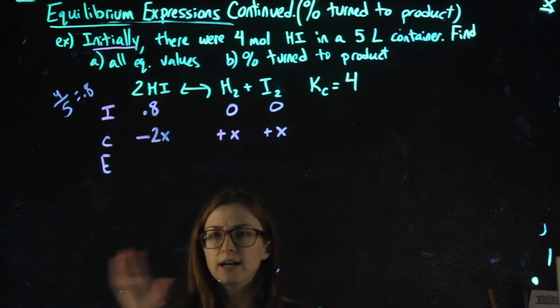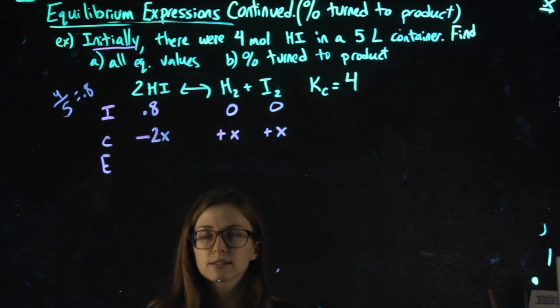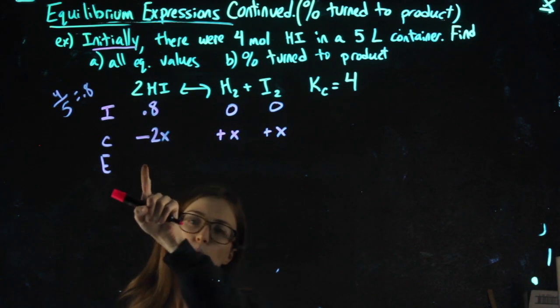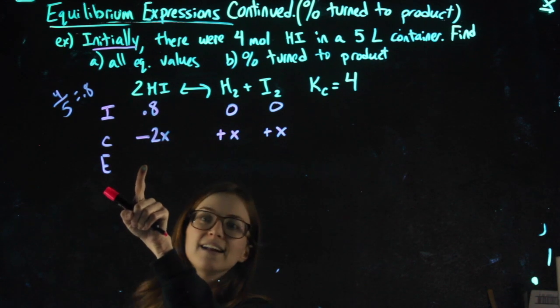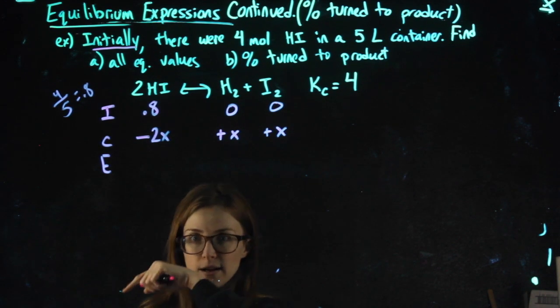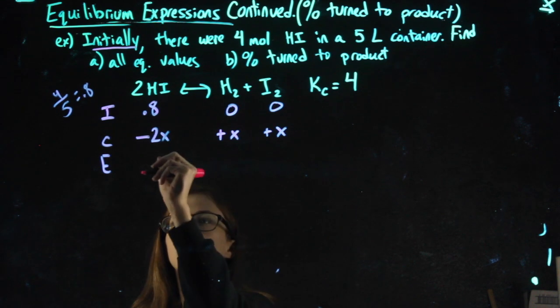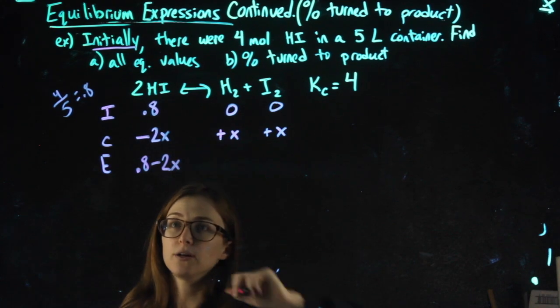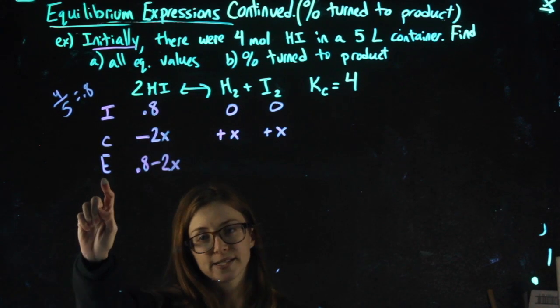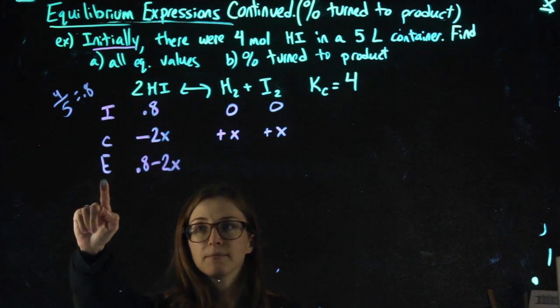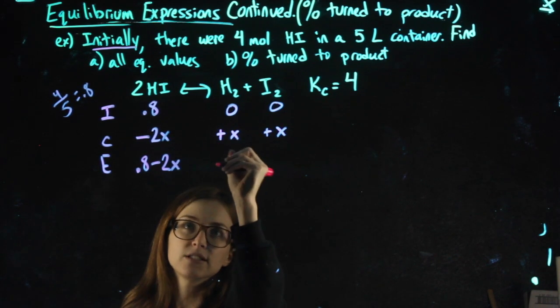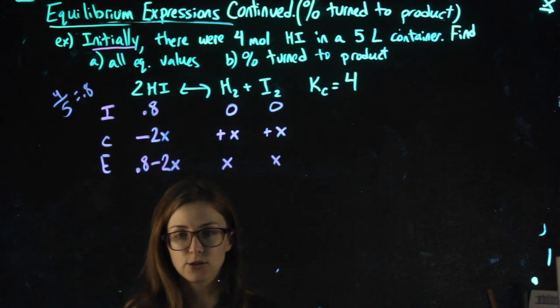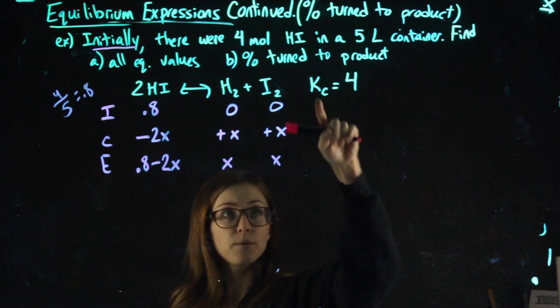Normally what you're used to is having a number in one of these spots so that you can set up that equation and solve for X. I don't have any numbers here, so I say pretend that you did. If I were trying to figure out what goes here, I would type in my calculator 0.8 minus 2 times that X value. That expression, 0.8 minus 2X, is what I'm gonna write as my equilibrium. 0 plus X is just X, and 0 plus X is also just X.